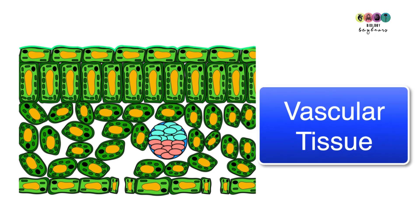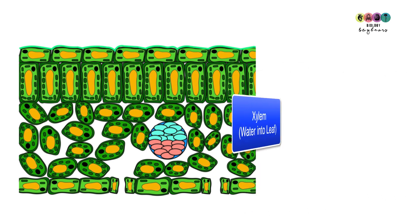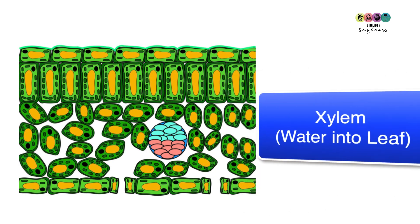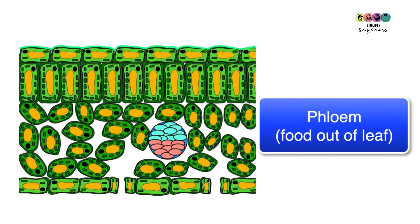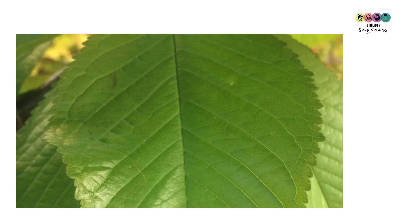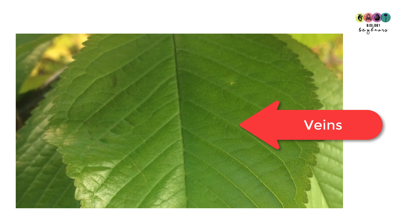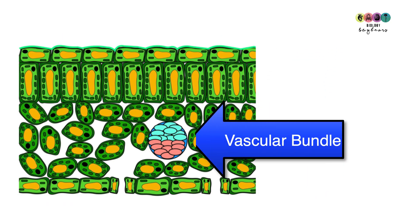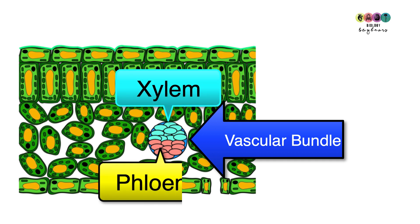The vascular tissue consists of the xylem, which transports water upwards into the leaf, and the phloem, which transports the food made in the leaf downwards through the plant. The veins visible on the surface of the leaf are composed of vascular tissue. In the internal structure, the vascular bundle shows xylem at the top and phloem at the bottom.